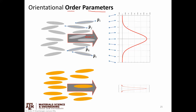An order parameter is basically a scalar — a number that allows us to answer that question. We can think about some extreme cases. Looking at the top case versus the bottom case, if you qualitatively look at the pictures, you can see in the bottom case that the mesogens tend to be a little bit more aligned. We're going to introduce the term 'director' — the thing pointing in the average direction.